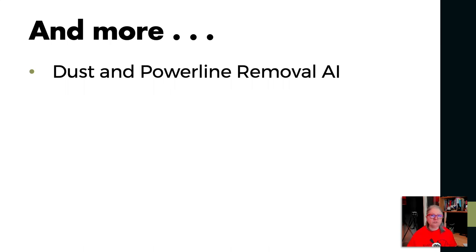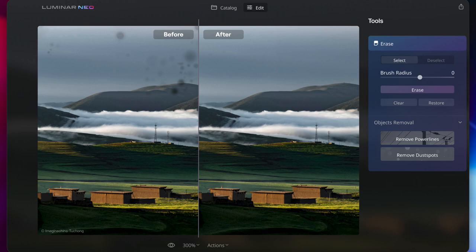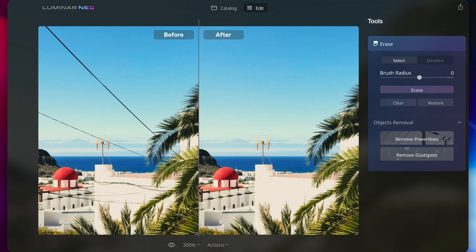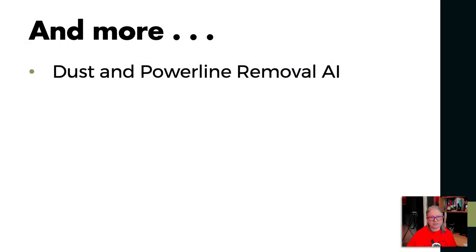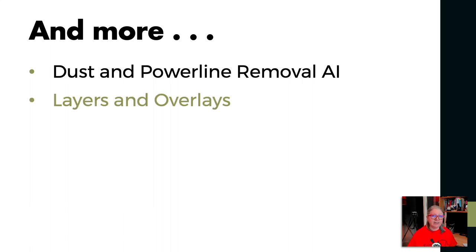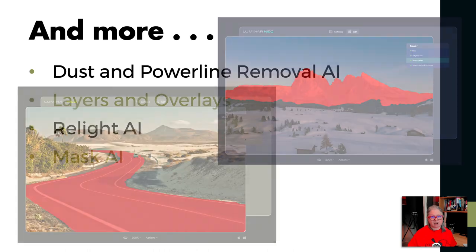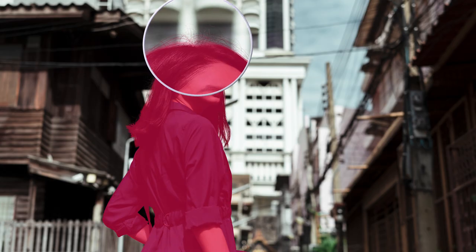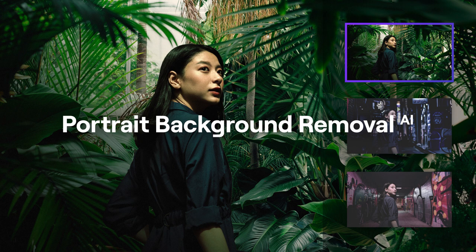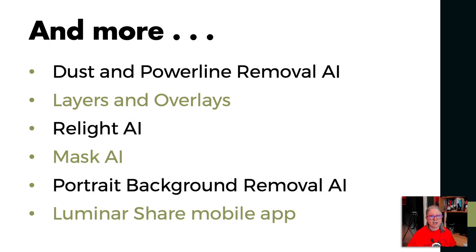Luminar Neo will also have many new tools such as Dust and Powerline Automatic Removal. I've already done a sneak peek of Luminar Neo and demonstrated these tools in another video — the link is in the description below. Luminar Neo will also have layers and overlays, Relight AI, and Masking AI which will do even more than masking in the new Lightroom and Photoshop. Portrait Background Replacement and Removal is also included, along with a new Luminar Share mobile app so you can easily get your images from your computer to your phone and upload to your favorite social media sites quickly and easily.